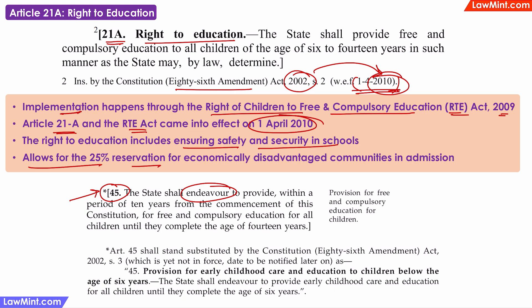the old Article 45 was also changed to say that the state shall endeavour to provide early childhood care and education for all children until they complete the age of 6 years.